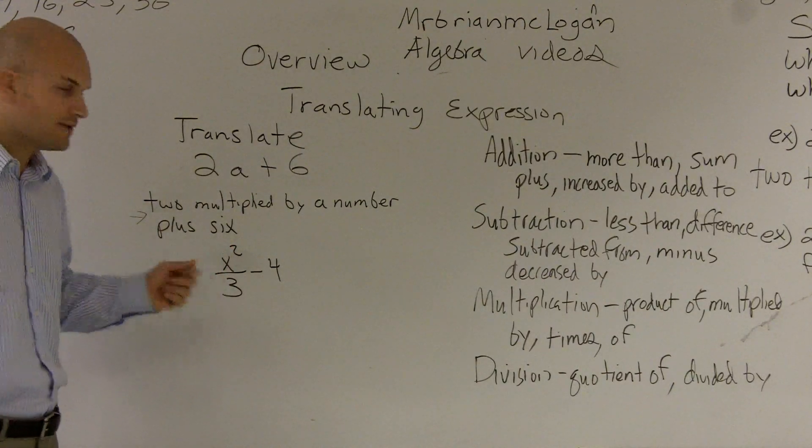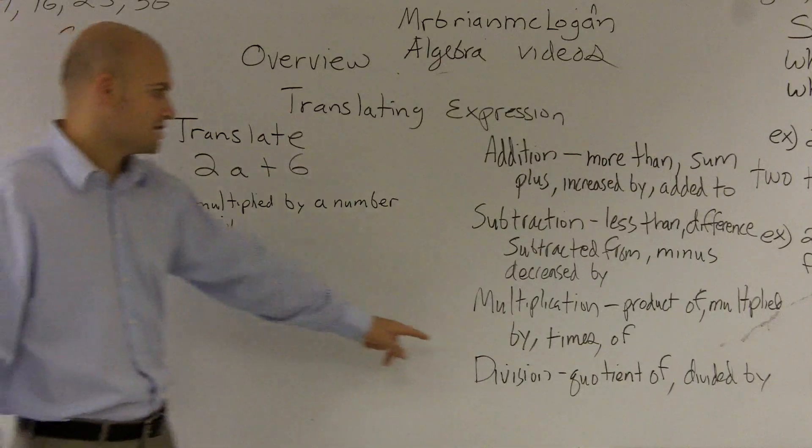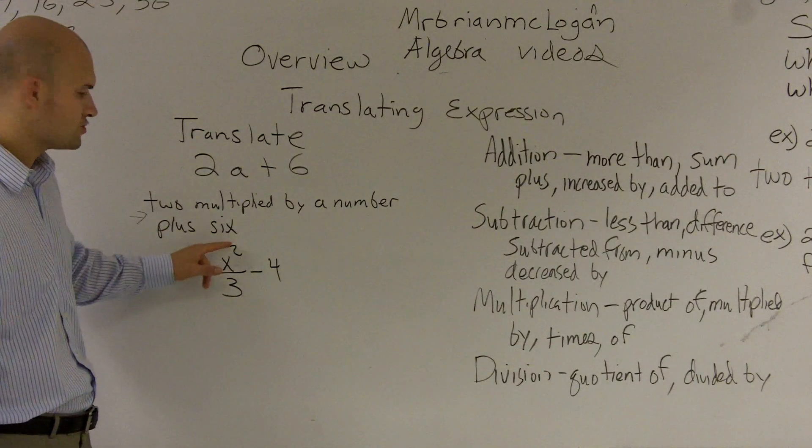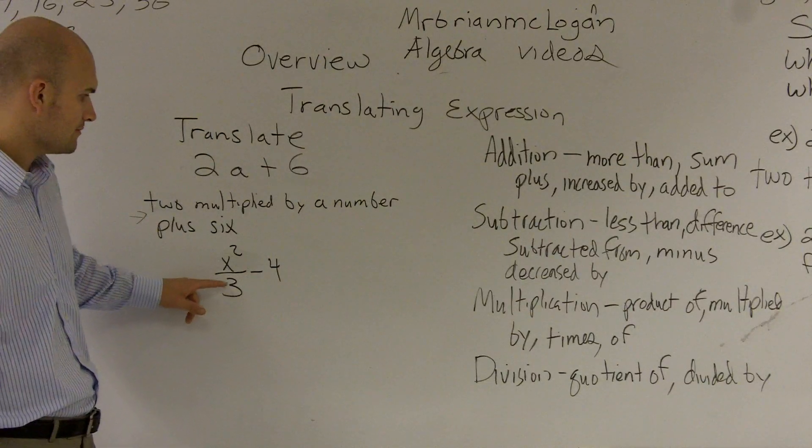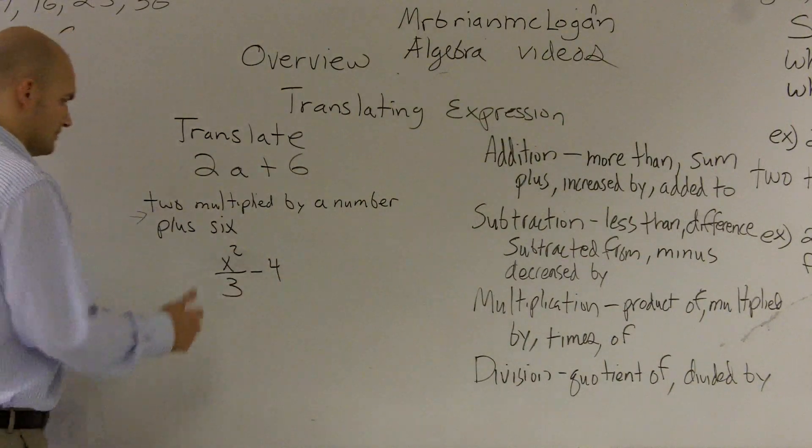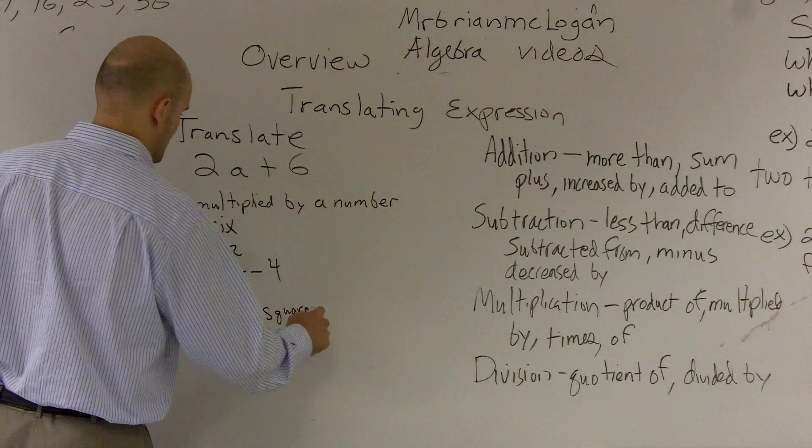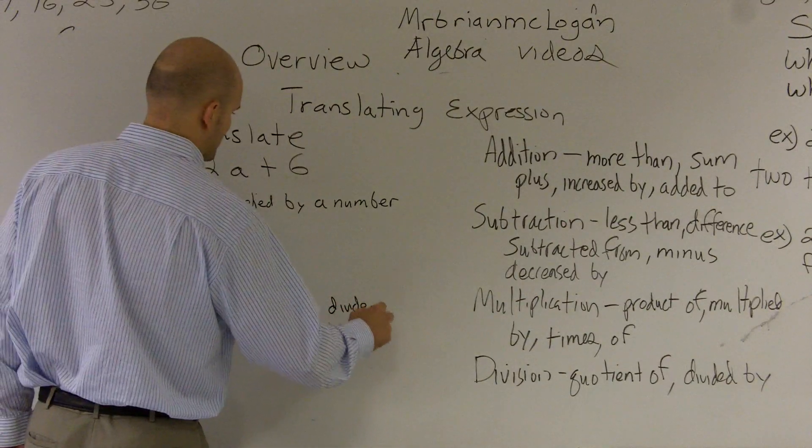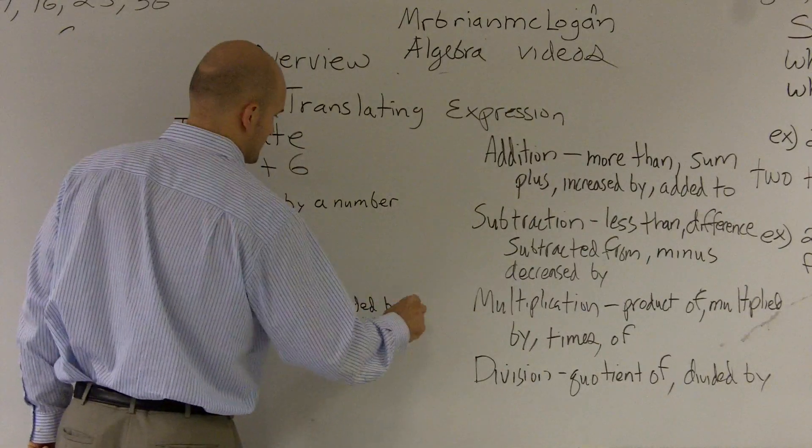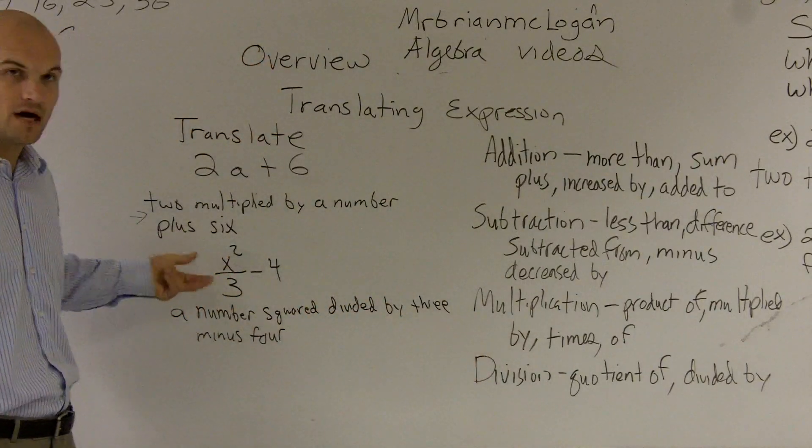A lot of times when it's raised to a power of 2, we say it's squared. So you could say a number raised to the power of 2 is divided by 3. So in division, I also could say the quotient of a number squared and 3. But I'm going to say for this one, I'm going to say number squared divided by 3 and minus 4.